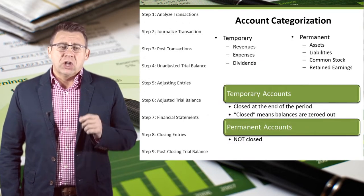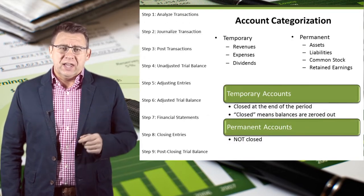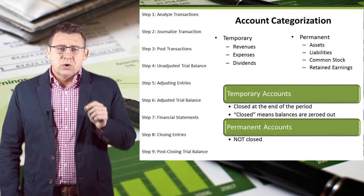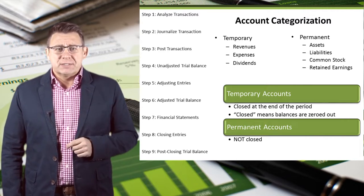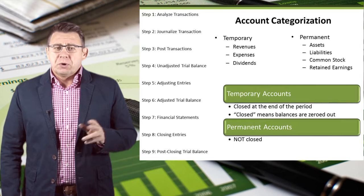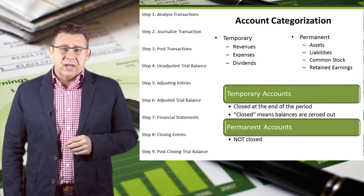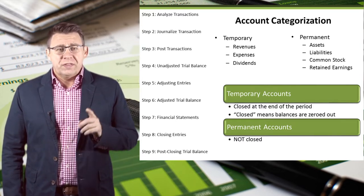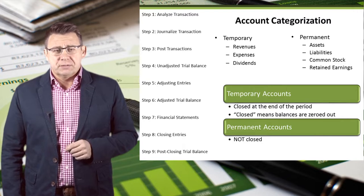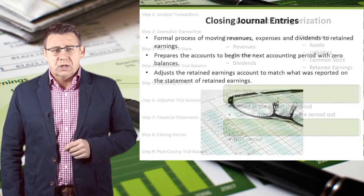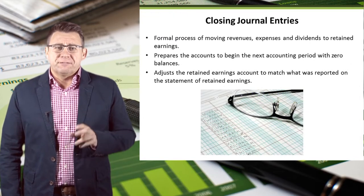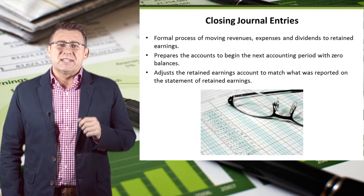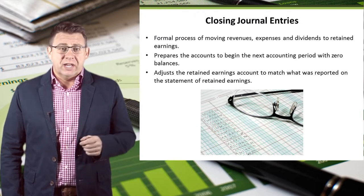Temporary accounts are closed at the end of the accounting period. Closed means we want to zero the account balance. Permanent accounts are unaffected by closing journal entries, with the exception of retained earnings. The closing journal entry is a formal process of moving revenues, expenses, and dividends to retained earnings.